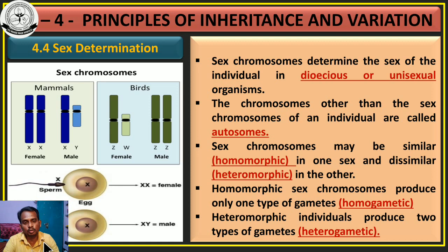Before going to the topic, we must understand two important concepts. One is what is meant by autosome, and what is meant by allosome. Autosome means somatic chromosomes — that means chromosomes that are responsible for the somatic characters, that means morphological characters.